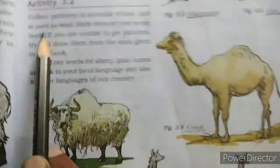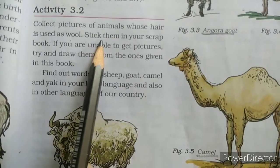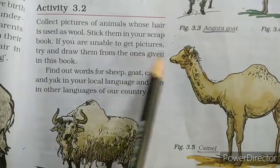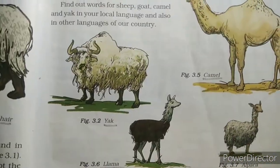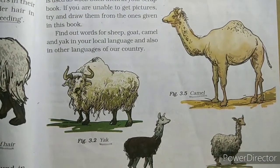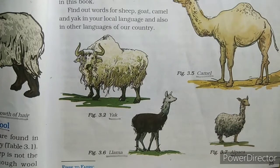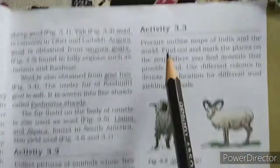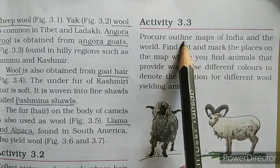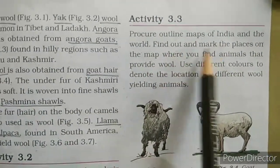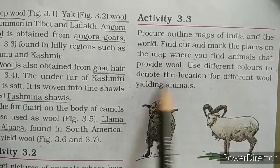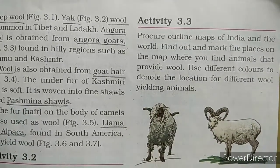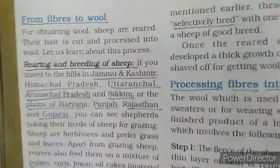Collect pictures of animals whose hair is used as wool and stick them in a scrapbook. If you are unable to get pictures, try to draw them from the ones given in this book. Find out the words for sheep, goat, camel, and yak in your local language and in other languages in our country. Another activity: procure outline maps of India and the world, find out and mark the places where you find animals that provide wool, using different colors to denote the location for different wool-yielding fibers.